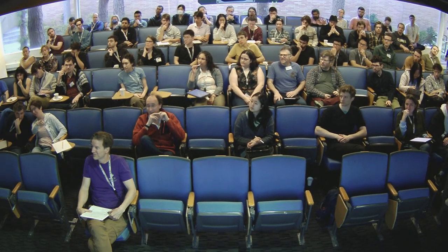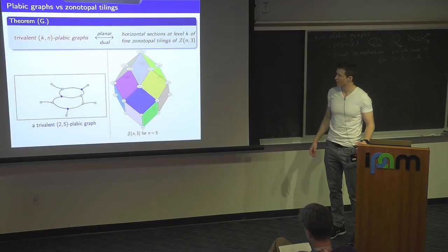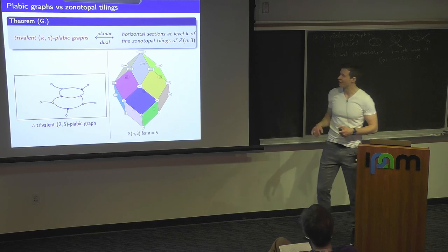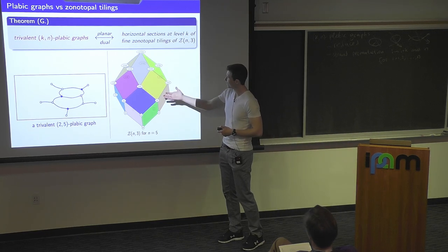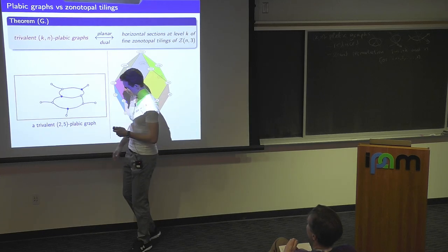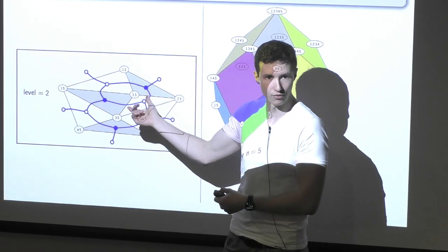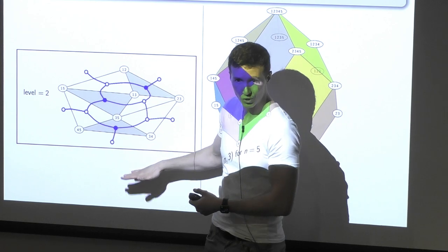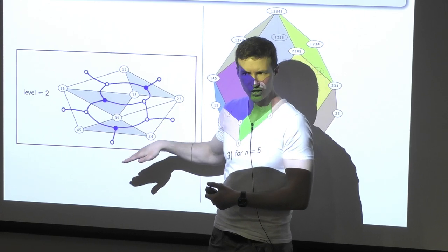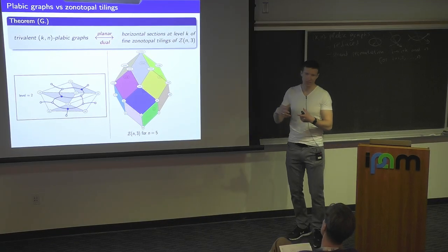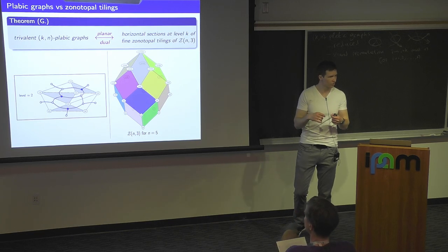Question: what does it mean to be compatible at different K-N levels? For you it means weaves — it's like the paper about weaves. If I give you a plebik graph, you can take pairwise intersections of the two face label sets for every edge, giving a collection of sets of size one smaller. That's going to be a collection of face labels for a plebik graph one level smaller. But there's not enough information — you have to uncontract some vertices.